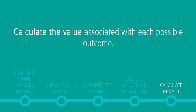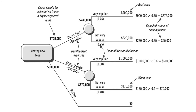That helps us calculate the value associated with each possible outcome. Start at the right side of your decision tree and work to the left as you calculate. Using each of these essential elements, you'll create a decision tree that looks something like this. Remember, a more quantitative decision tree can be constructed and used for the same purposes. Now go and create great decision trees.